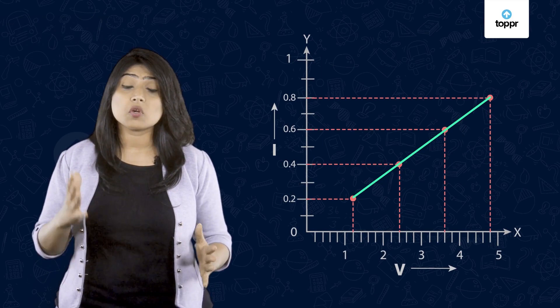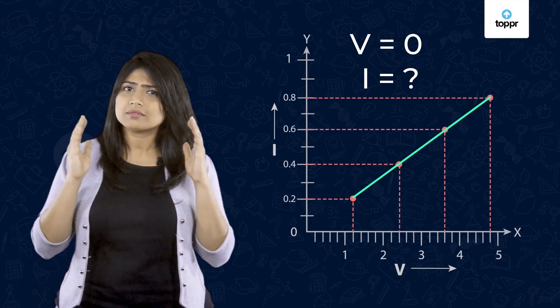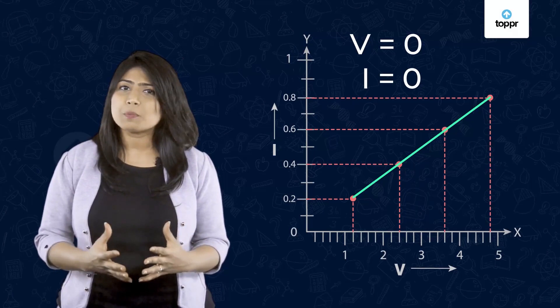We've measured the current for different values of voltage now. What if the voltage is zero? That is a circuit without the cell. What would the current be? Yes, it would be zero. So, the graph should pass through the origin too.